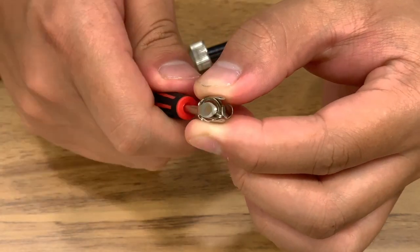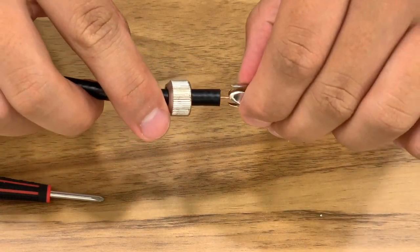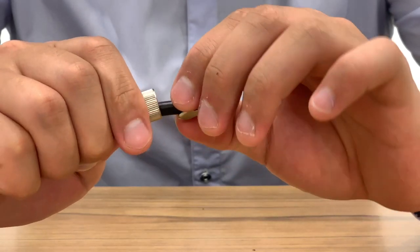Using the screwdriver widen and adjust the cable clamp and now slide the clamp onto the cable and tighten.